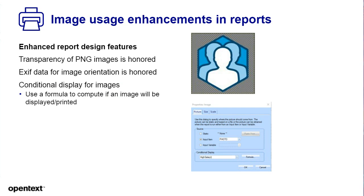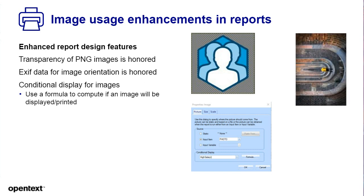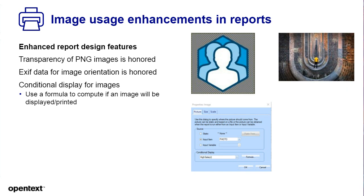Image usage enhancements in reports: there are several new things with images. The transparency of PNG images is now honored, so a gray background won't display anymore and the underlying image or background will show through. The EXIF data for image orientation is now honored, so if you have an image displayed in a certain orientation, it will now be corrected. Also, you now have conditional display for images — depending on the computation of a formula, you can display an image or not.